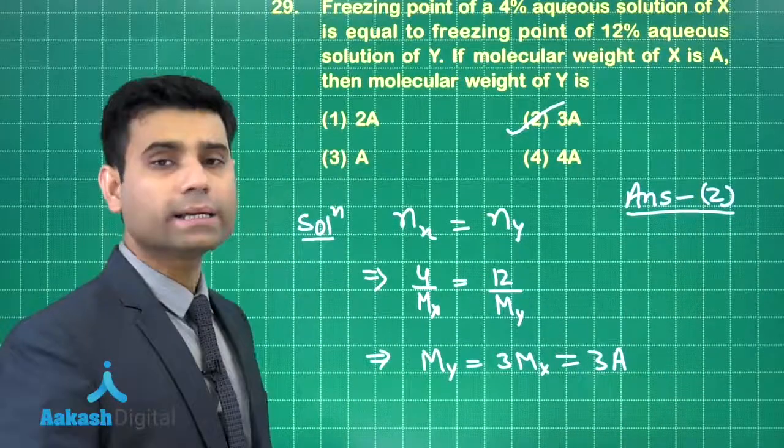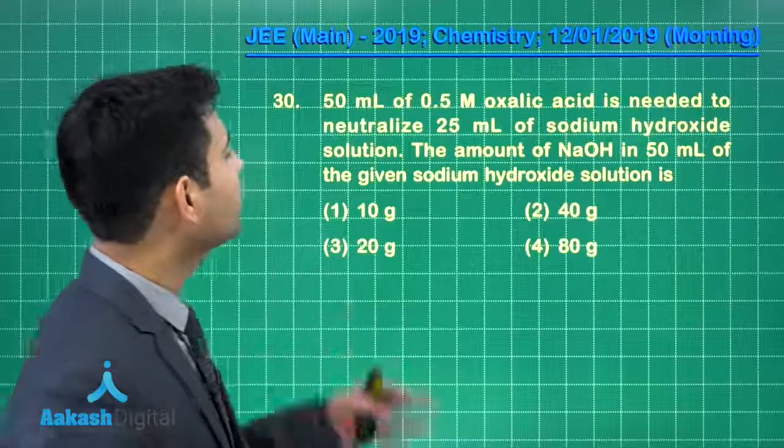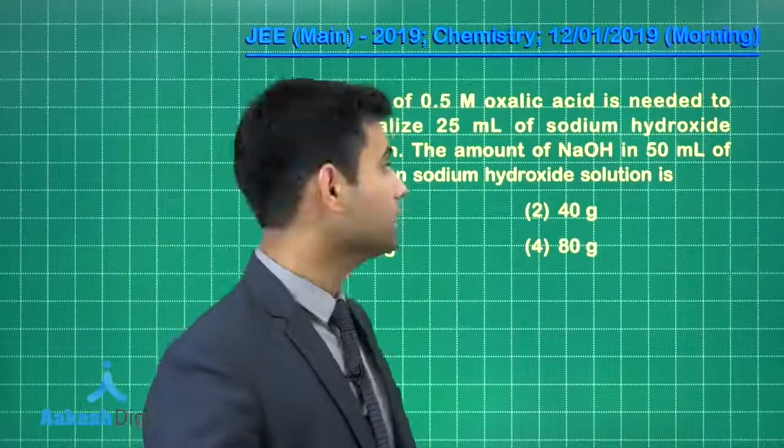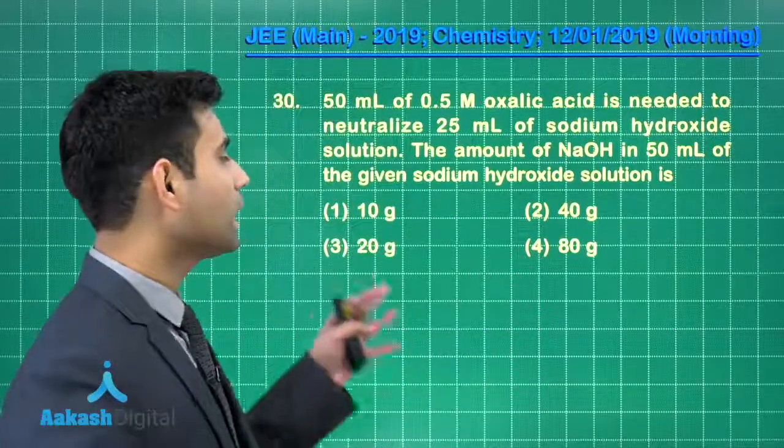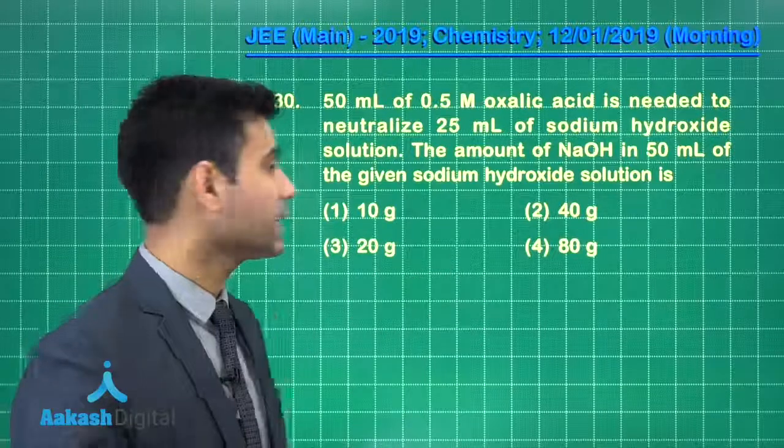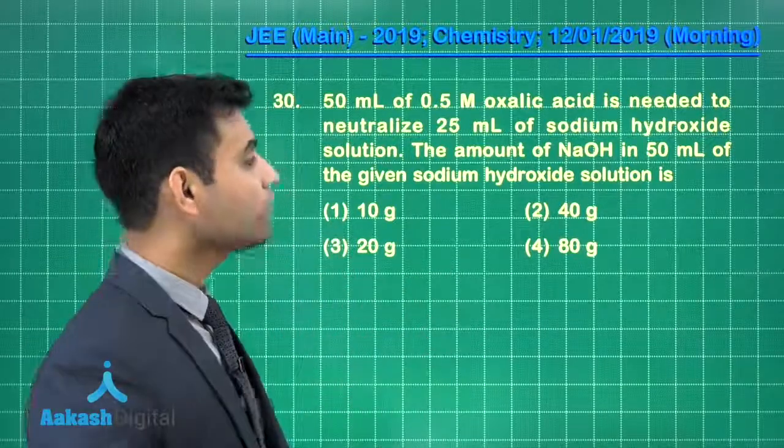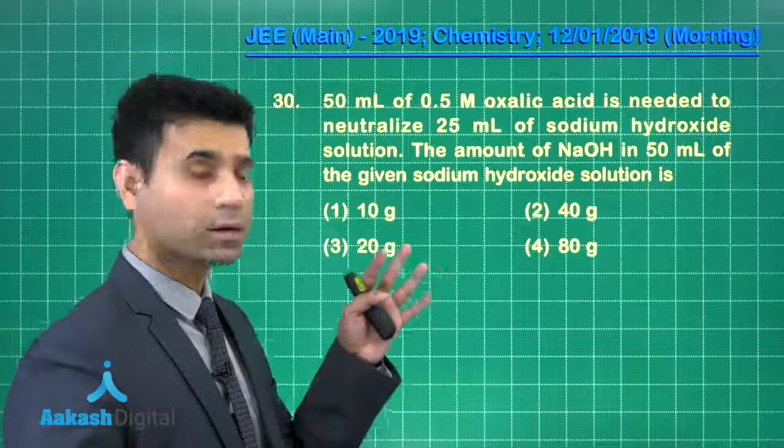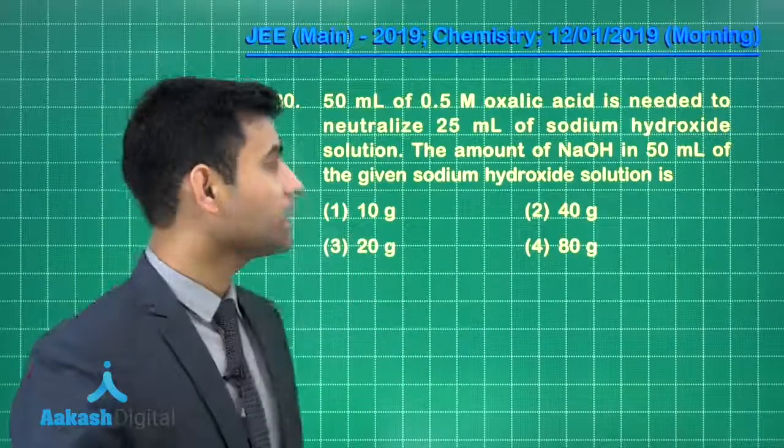Now let us move to the next question. This is the next question we have. It says 50 mL of 0.5 molar oxalic acid is needed to neutralize 25 mL of sodium hydroxide. The amount of sodium hydroxide in 50 mL of the given sodium hydroxide solution is.